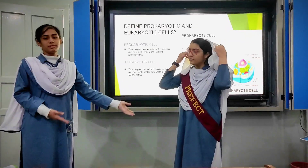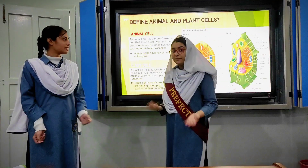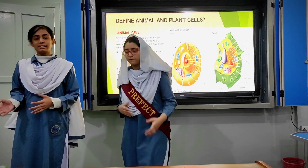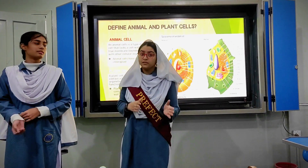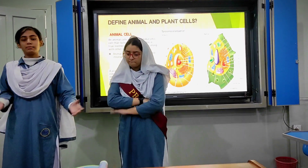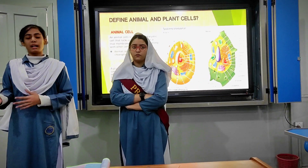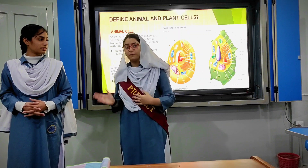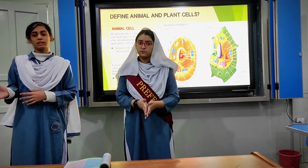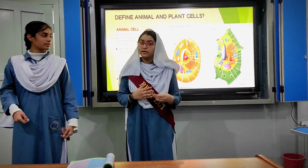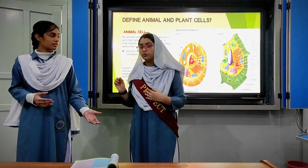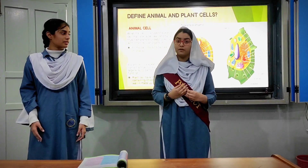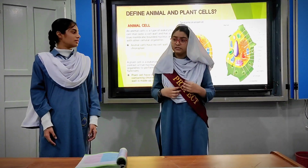Now we will define plant cell and animal cell. Animal cells do not contain cellulose cell walls; plant cells do contain cellulose cell walls. Animal cells do not contain plastids; plant cells do contain plastids. In animal cells, few vacuoles are present; in plant cells, there are a large number of vacuoles. Animal cells do not have plasmodesmata; plant cells have a large number of plasmodesmata. Now, cell wall and its layers: the cell wall surrounds the cell membrane and is responsible for many characteristics that distinguish plant cells from animal cells.